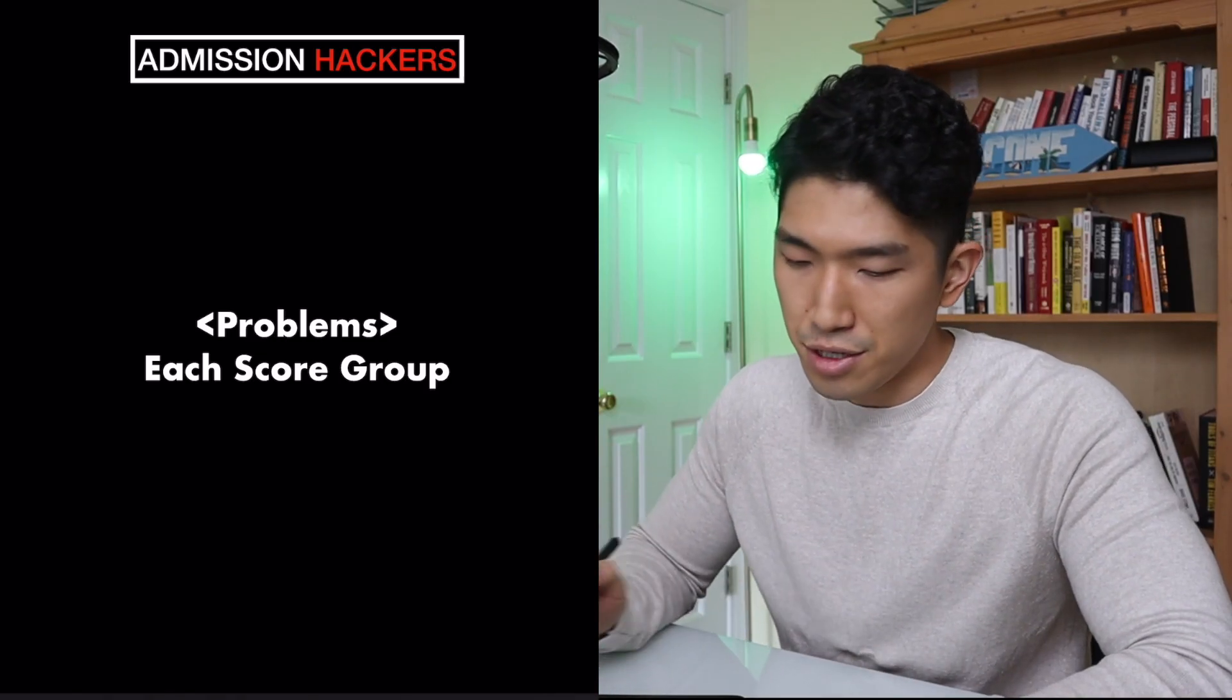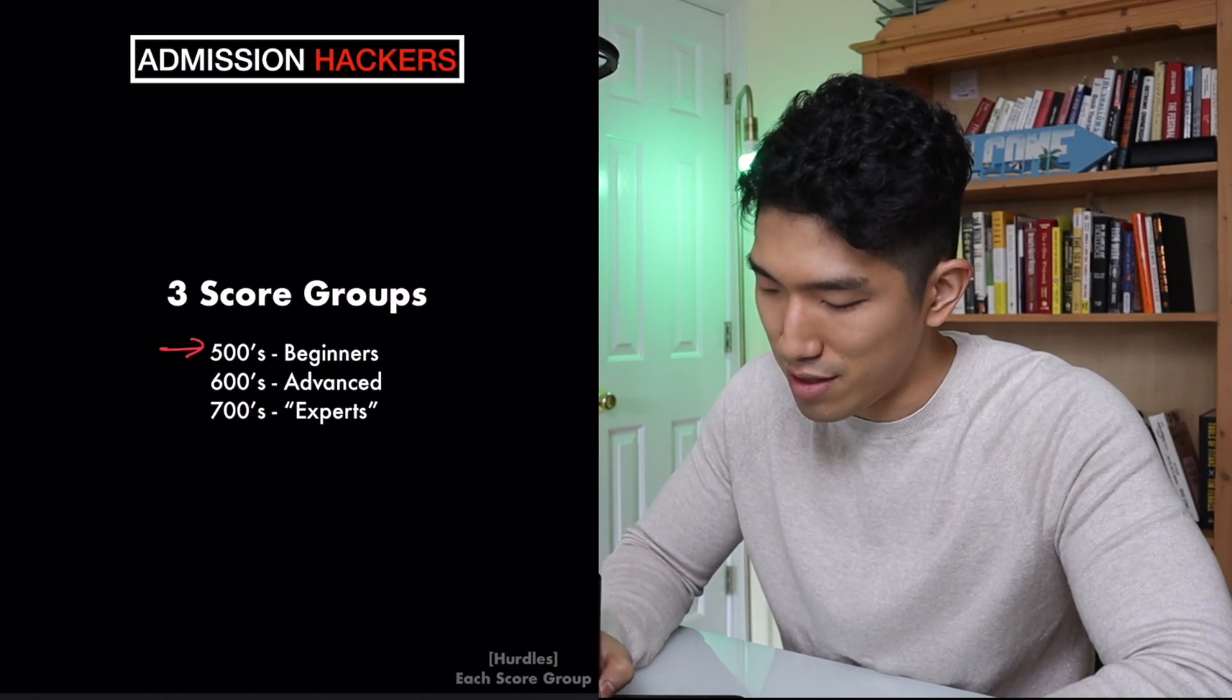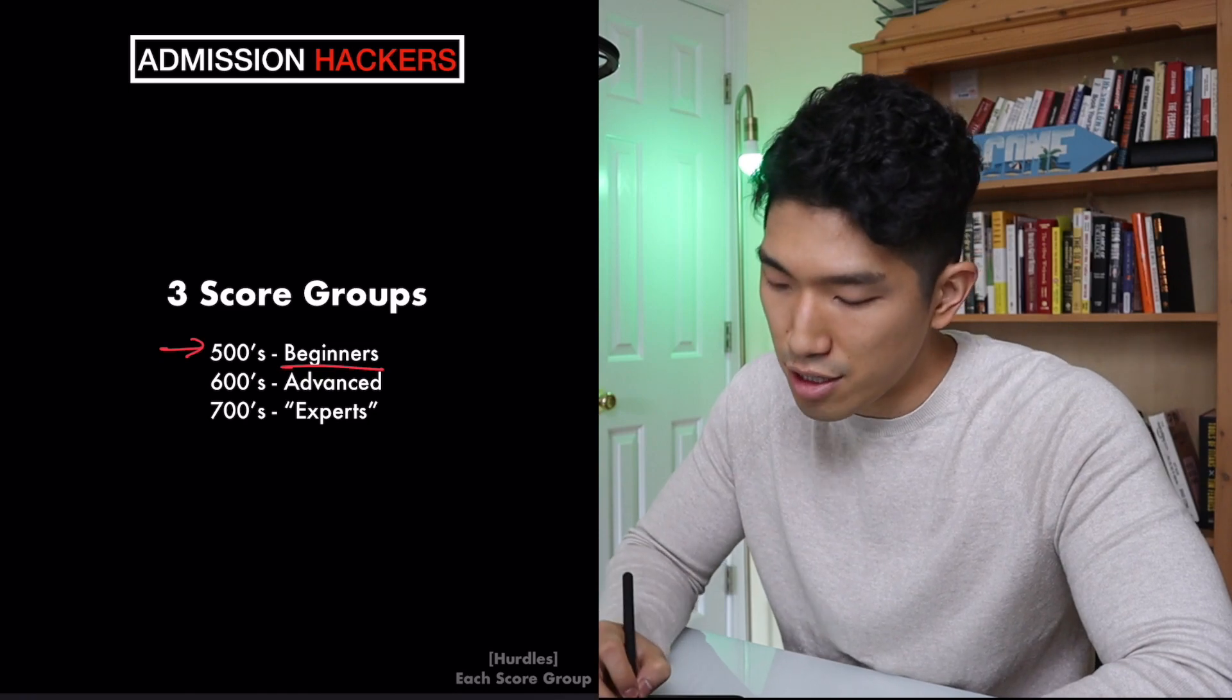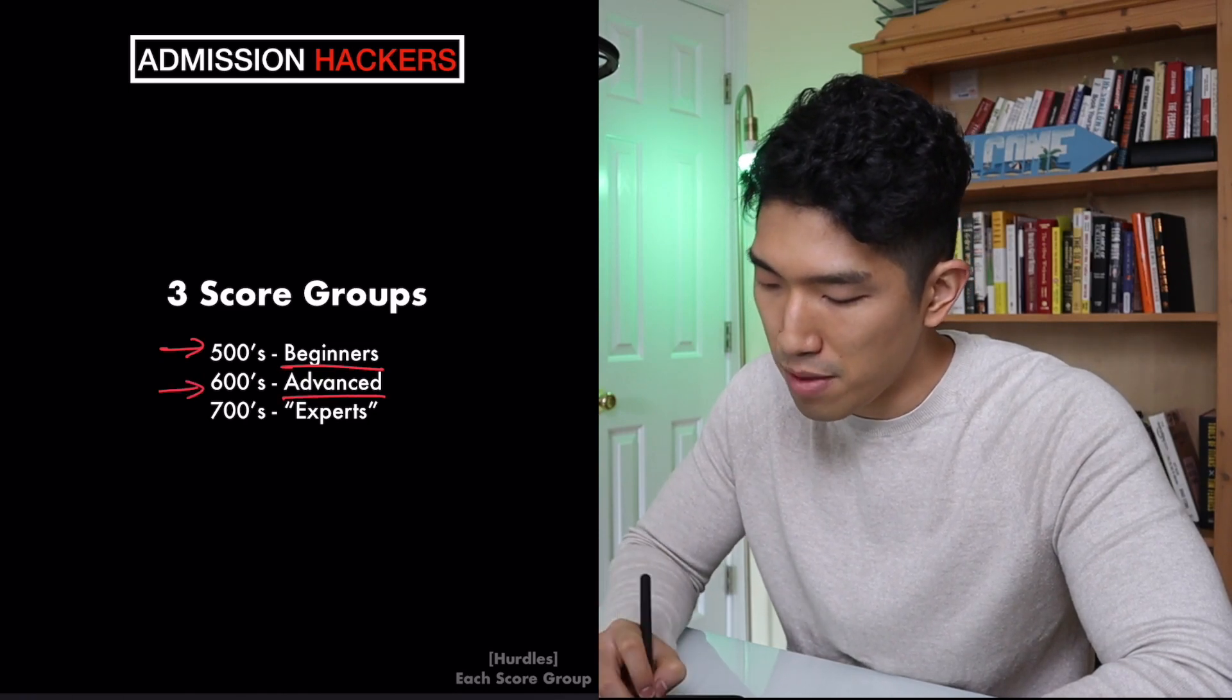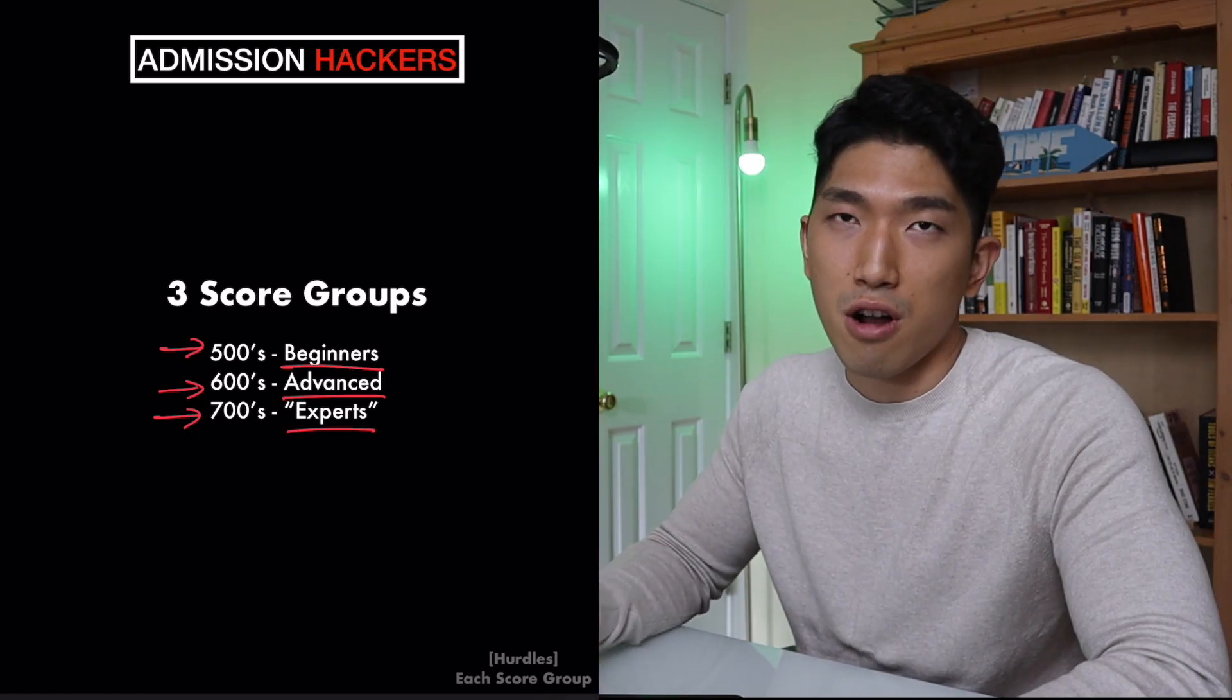So let's go over the problems in each score group. And we have three score groups. First one is going to be the 500s. They are going to be the beginners. And 600s are going to be the advanced people. 700s are going to be the quote unquote experts.